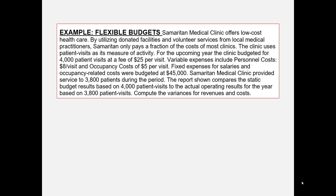Let's look at an example. Samaritan Medical Clinic offers low-cost health care by utilizing donated facilities and volunteer services from local medical practitioners. Samaritan only pays a fraction of the cost of most clinics. The clinic uses patient visits as its measure of activity. For the upcoming year, the clinic budgeted for 4,000 patient visits at a fee of $25 per visit.